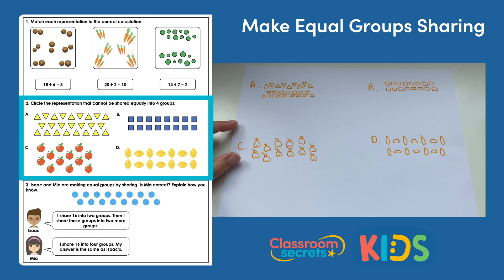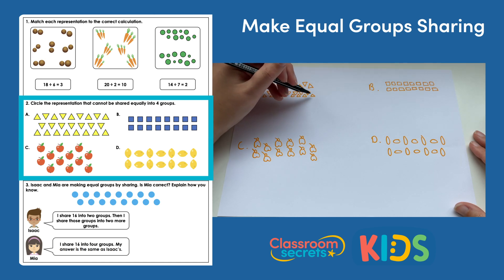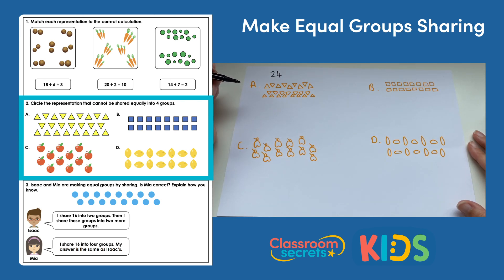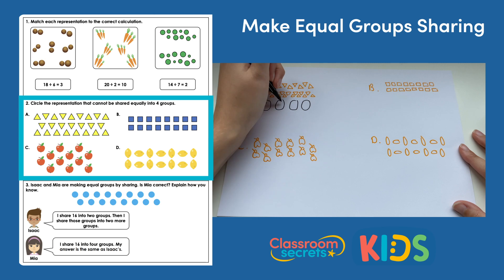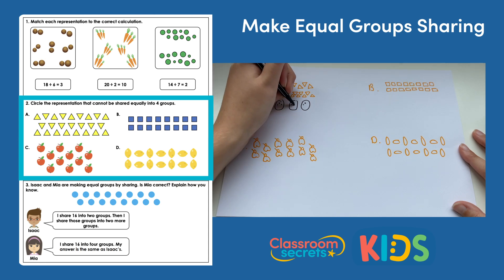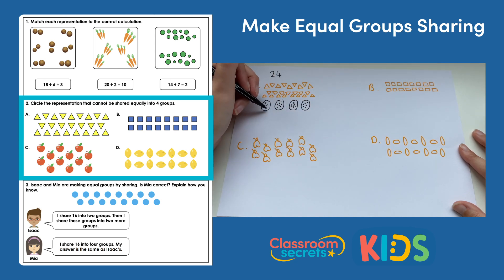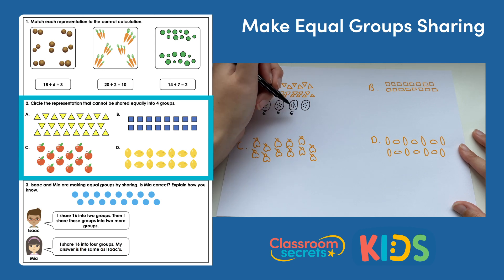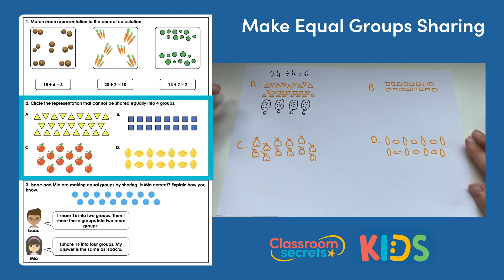Let's start with the triangles. Counting them up: twenty-four triangles altogether. I'm going to draw four groups and put a dot in each, counting up to twenty-four. I end up with six in each group, and the groups are equal. So we can share twenty-four into four equal groups and the answer is six.